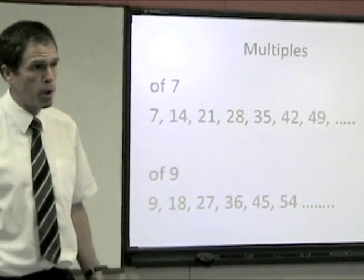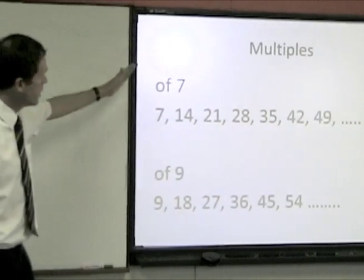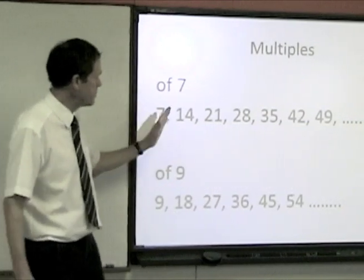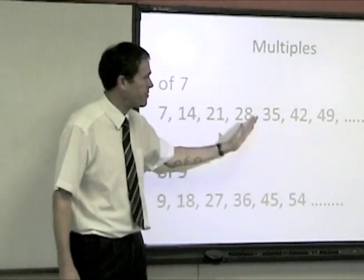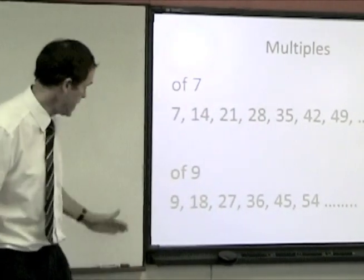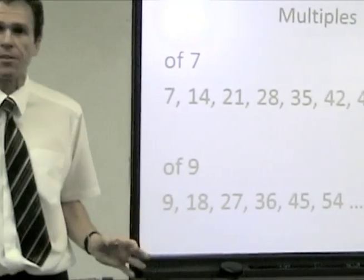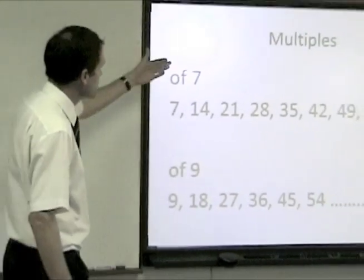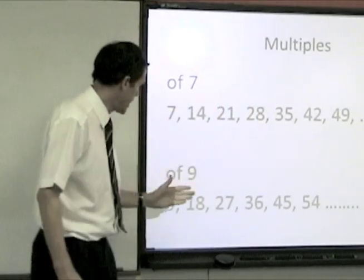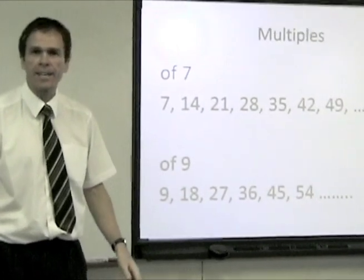I know that you all know what multiples are but just to remind you, the multiples of 7 are 7, 14, 21, 28, 35, 42 and 49 and the multiples of 9 are 18, 27, 36, 45 and 54. They are the numbers that 7 is a factor of and here the numbers that 9 is a factor of.